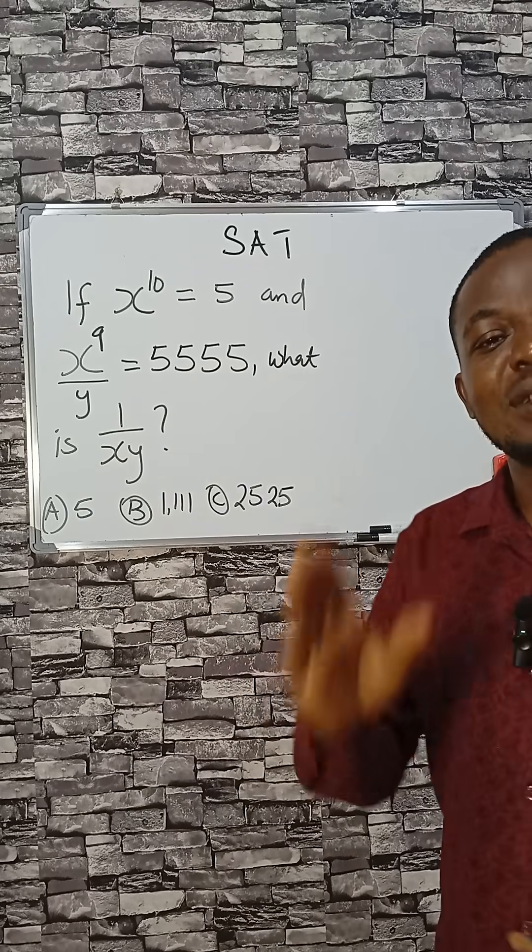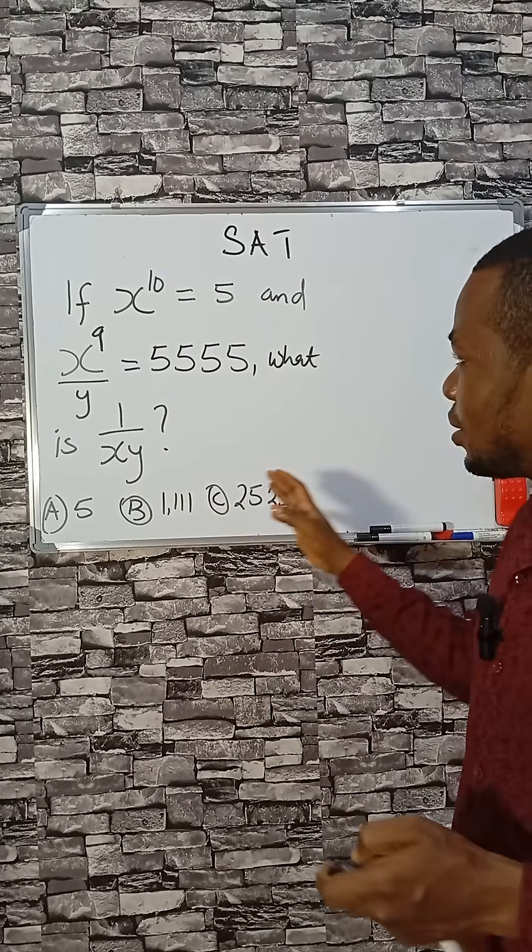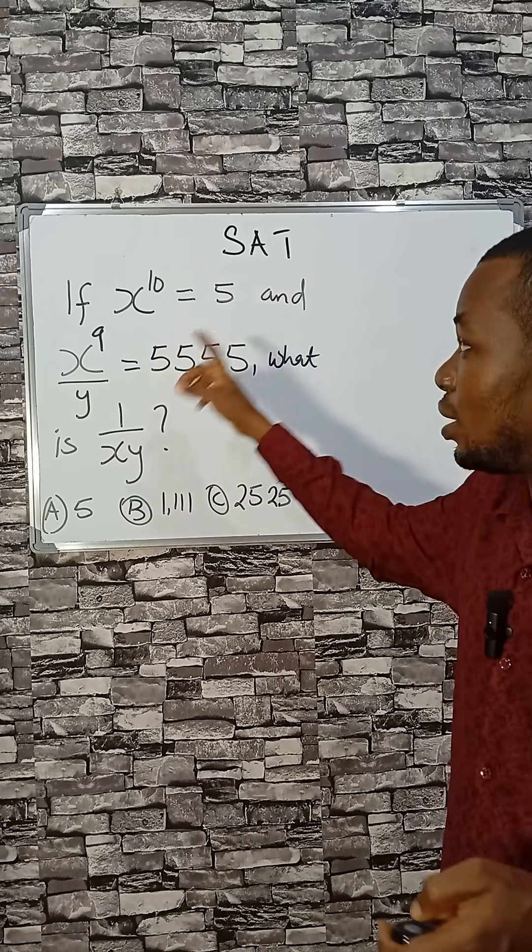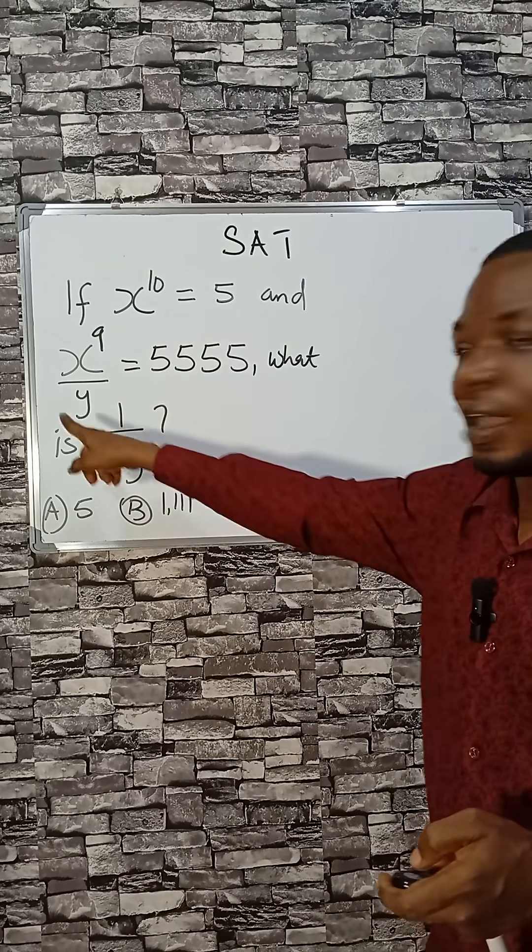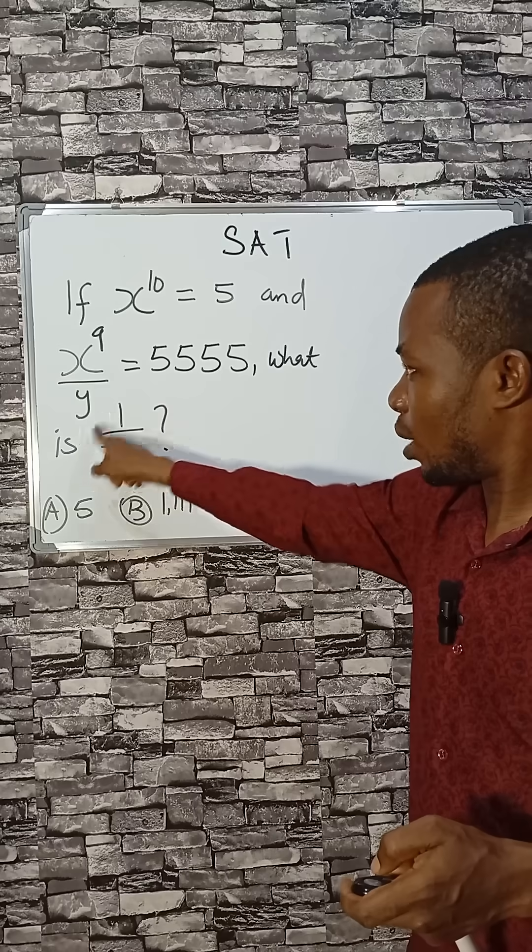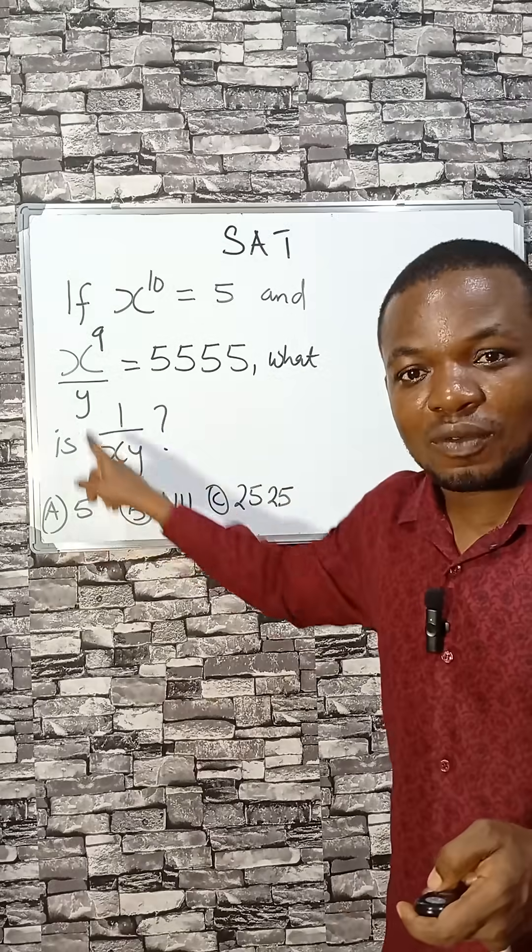So many students failed this, about 99 percent of students failed this. This is one of the ACT equations. If x raised to the power of 10 equals 5 and x raised to the power of 9 divided by y equals this, what is the value of 1 over xy?